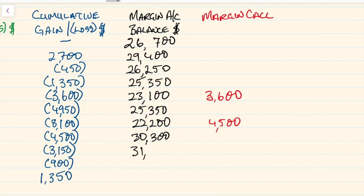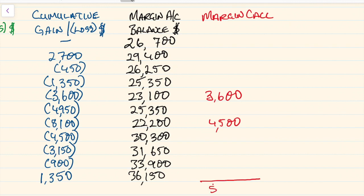As we continue through, we add on all the other amounts and as gains come in towards the end we bring the margin account balance up to a final total of $36,150. Therefore the margin surplus in this case ends up being $8,100 above the initial margin. Once we have that figure and know what that amount is, that's the answer to the question — that's the key part.